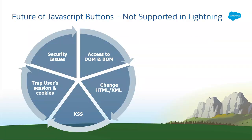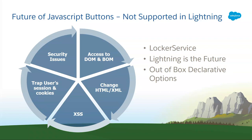JavaScript — we all loved it, right? It's a robust language with so many features. It has access to DOM, BOM. However, if it falls under malicious actors, it can be disastrous. It can change your HTML and XML elements, introduce cross-site scripting, or track your user sessions. Hence, JavaScript buttons are no longer supported in Lightning. Fortunately, we have Locker Service to secure your Lightning components. Lightning is the future, and we have so many out-of-box declarative options I'll be discussing throughout the session.